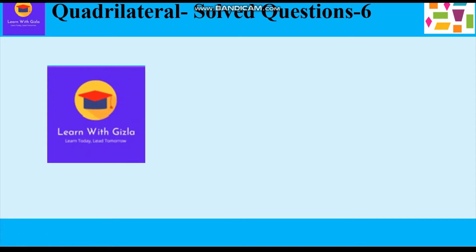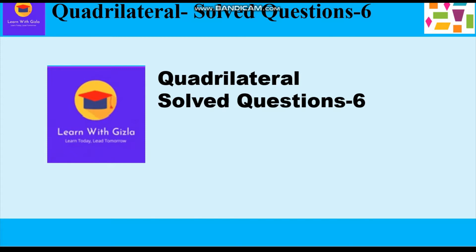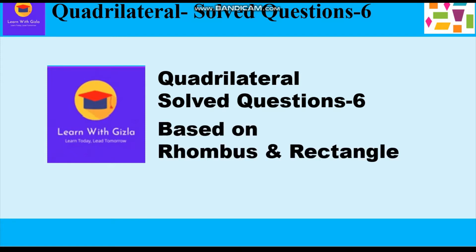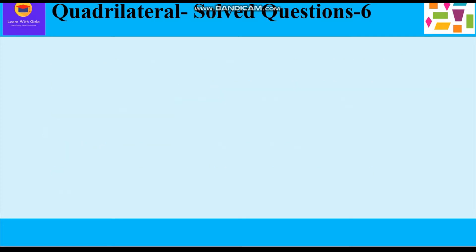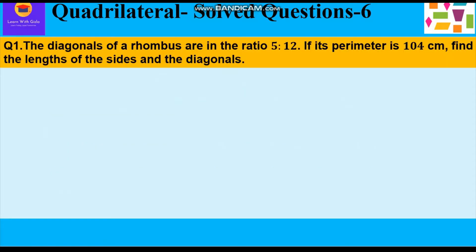Hello dear students, hope you are doing good. Welcome to YouTube channel Learn with Gizla. In this video on quadrilaterals, we shall be taking two questions based on rhombus and rectangle. The first question is based on rhombus: the diagonals of a rhombus are in the ratio of 5 is to 12. If its perimeter is 104 cm, find the length of the sides and the diagonals.